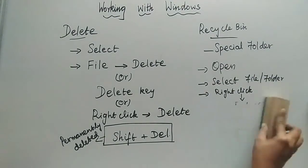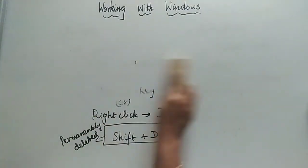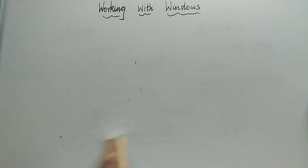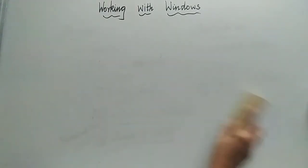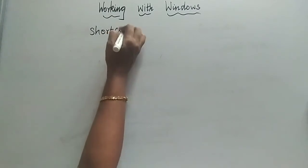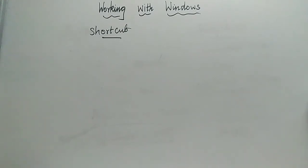Next we are going to see another topic: creating shortcuts on the desktop. What do you mean by shortcut? You have a main path to reach a file, but instead of going through all those steps, you go in a shortest path to save your time. The steps to create a shortcut are very simple. First, select the file or folder you want to have on the desktop.